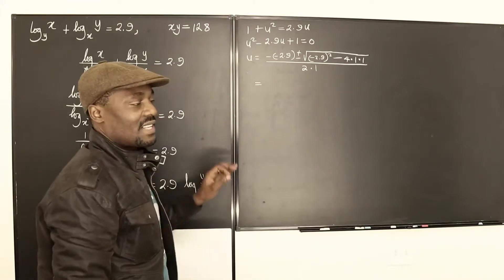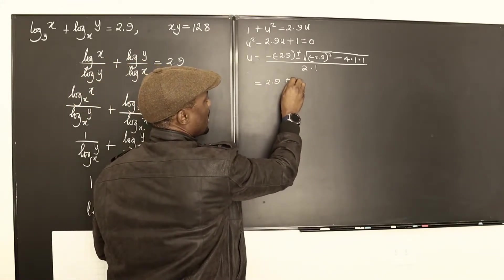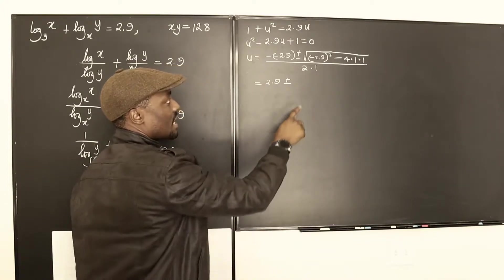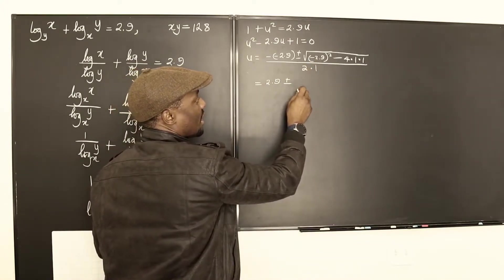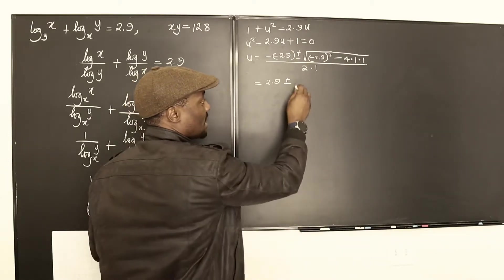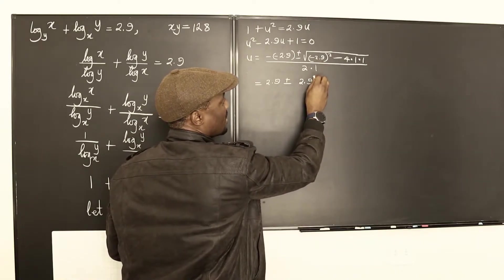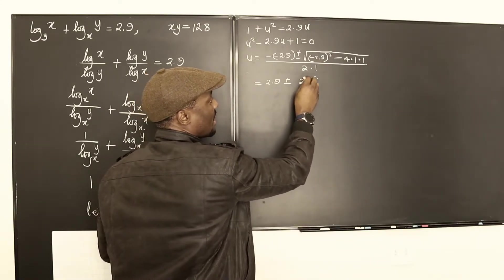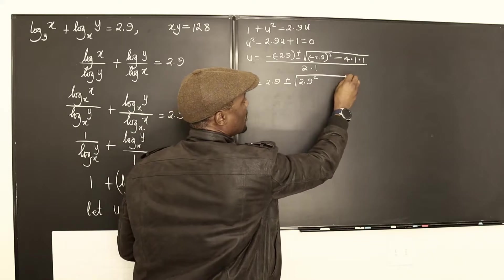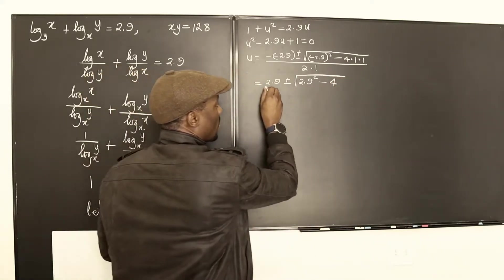So if we get this out, this is going to be 2.9, 2.9 plus or minus, this is going to be, it will turn positive. It will become 2.9 squared. Square root of 2.9 squared minus 4. Now, all over 2a.